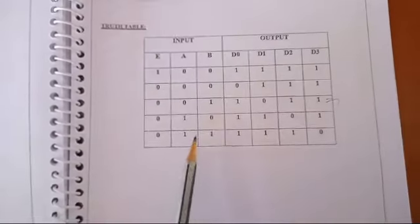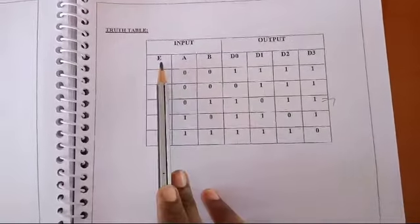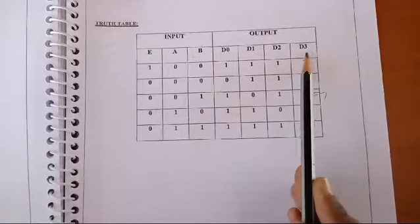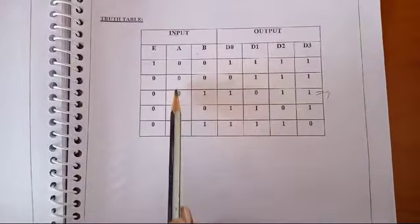Let's see about the output. This is the truth table of the decoder. It has 3 inputs and 4 outputs. E means enabled pin.